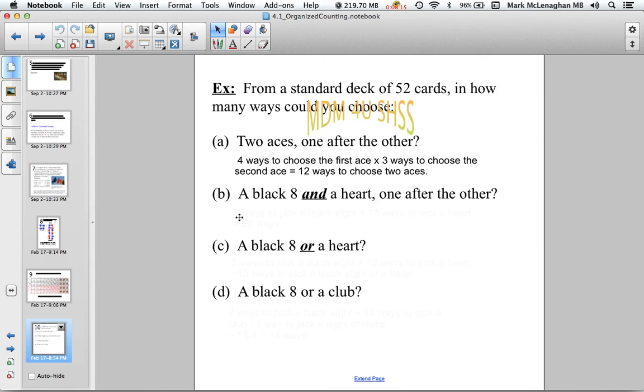Another example: a black eight and a heart, one after another—two cards. There's two ways of picking a black eight and 13 ways of picking a heart. We multiply those, so there's 26 ways of picking a black eight and a heart. Notice here we use the word 'and' and multiplication.